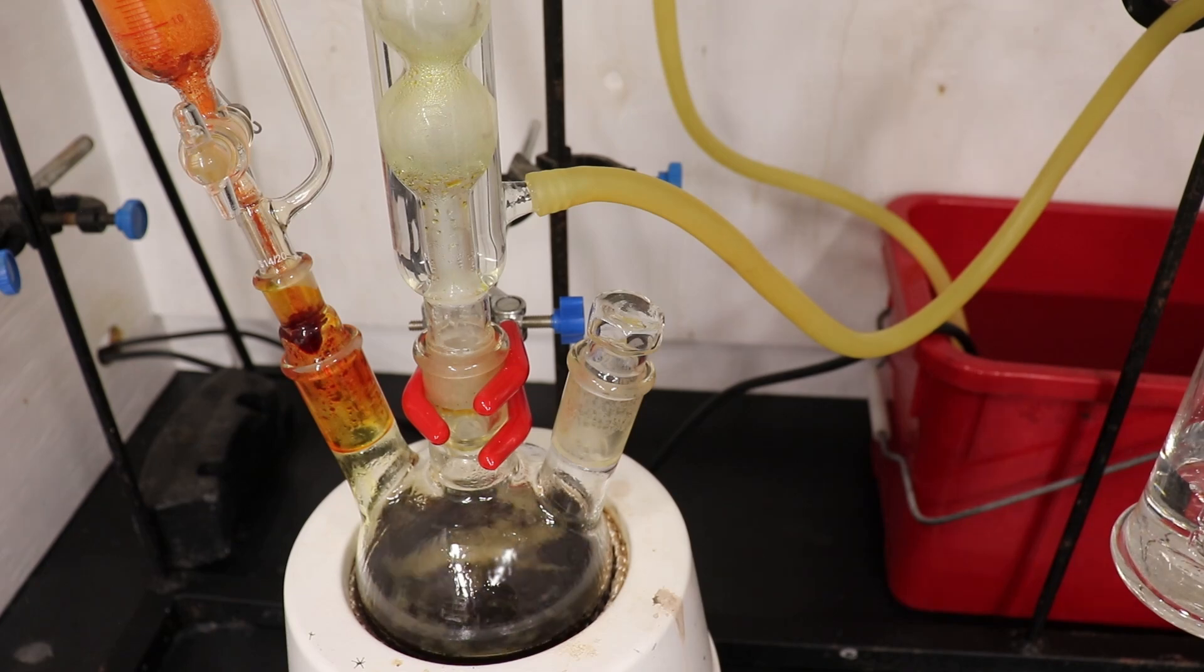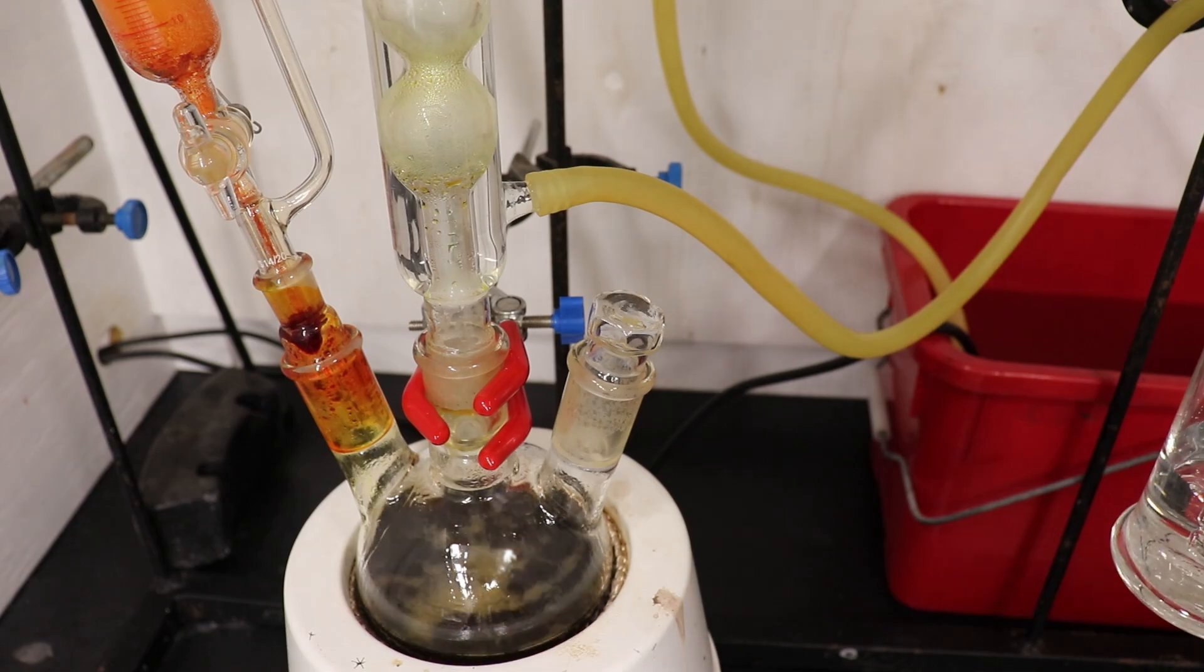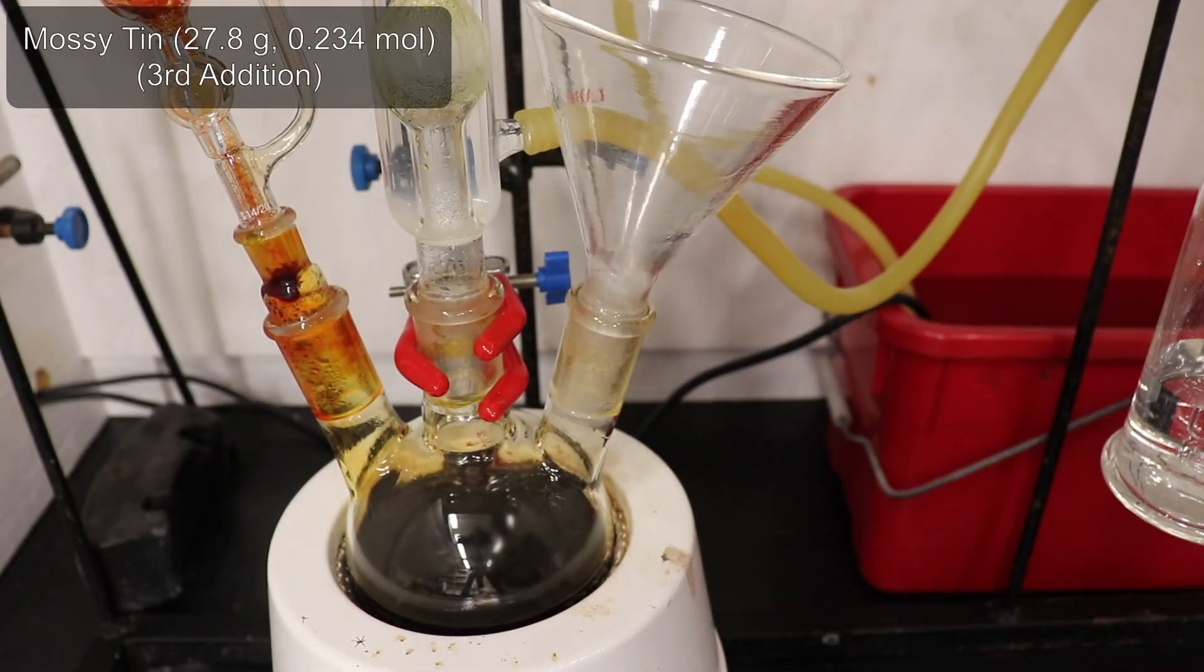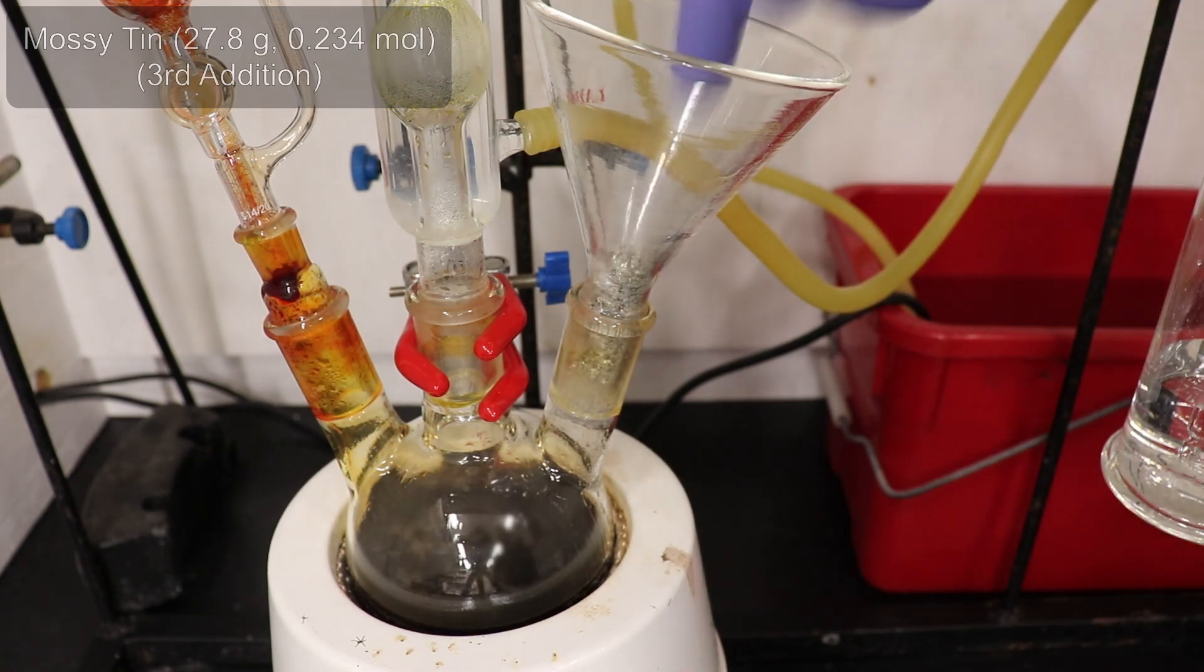I then prepared to add the third and final portion of tin, a larger 27.8-gram portion. In this clip, you'll see why the tin addition was broken into three portions, since when I tried to pour in this larger portion, it got stuck in the funnel.